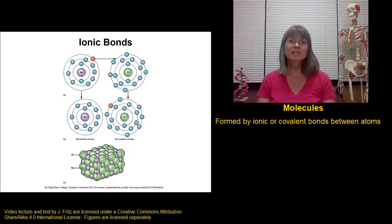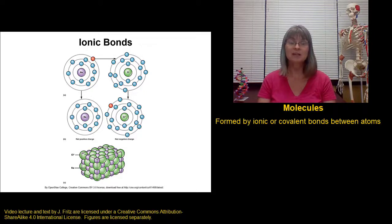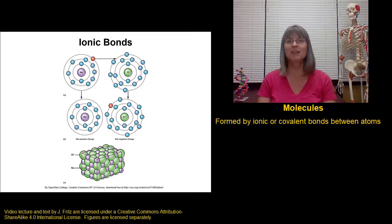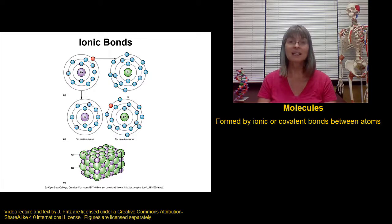We've seen some atoms bonded together in different arrangements, but we haven't talked much about types of bonds. There are two different important types of bonds that can form molecules: ionic bonds and covalent bonds.